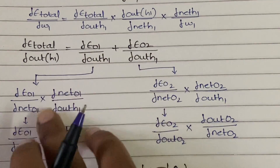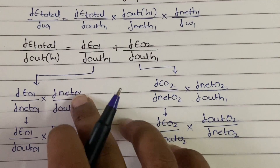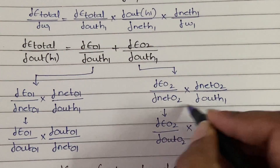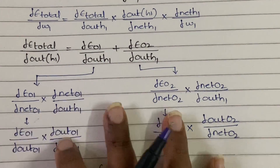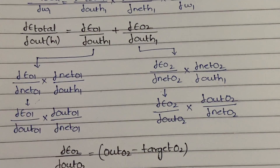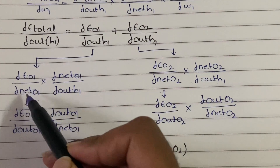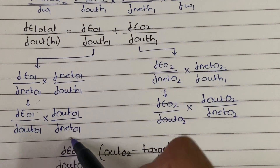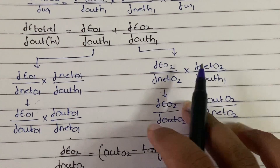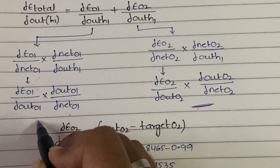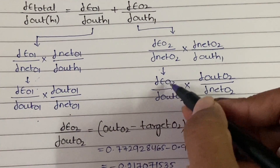To calculate dE_o1/d(out_h1) and dE_o2/d(out_h1), you apply the chain rule again: dE_o1/d(out_h1) = dE_o1/d(net_o1) × d(net_o1)/d(out_h1). And dE_o1/d(net_o1) further splits into dE_o1/d(out_o1) × d(out_o1)/d(net_o1). So in total we are dealing with two terms for each output neuron — you need to find both and then combine them.